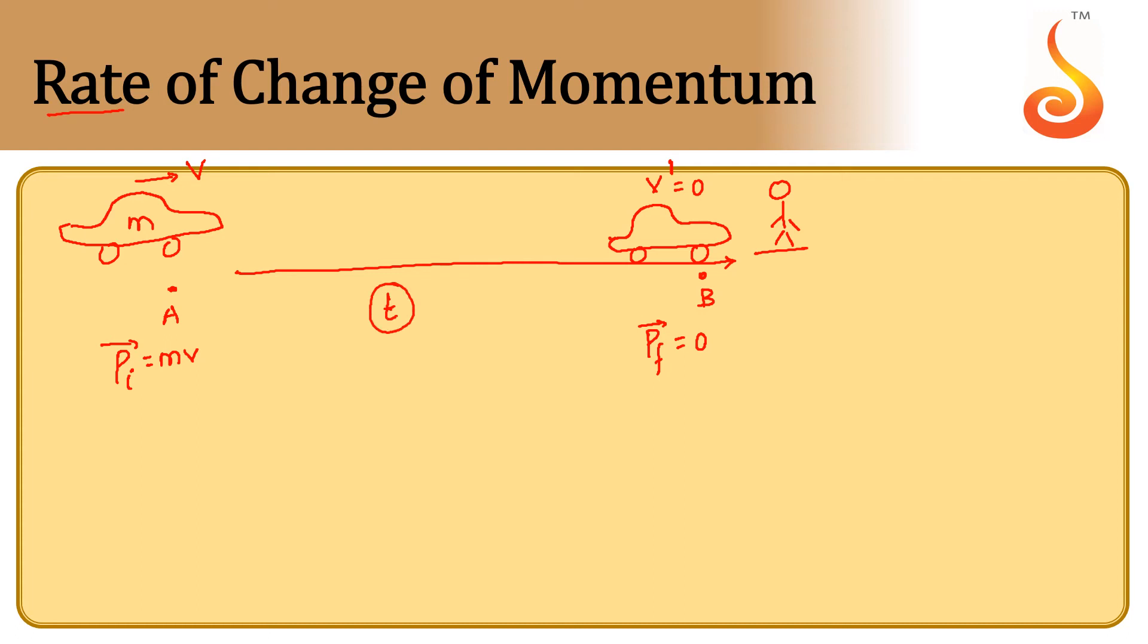Let us take another example. The same car of mass M moving with velocity V, and there is a person crossing the road at point B. In this case, when the driver sees the person crossing the road, he suddenly applies the brake.